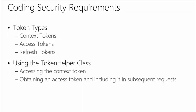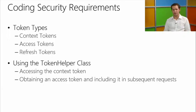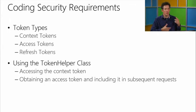Looking at the security aspect of provider hosted apps: a lot of this is abstracted from you by Visual Studio and the helper classes provided. When a user clicks your application, SharePoint creates what's called a context token — a piece of data passed across the wire to your app when it starts. That context token includes information about the caller, the app, which tenant it's on, the site, and other details. There are also GET parameters on the URL such as the SPHostURL.